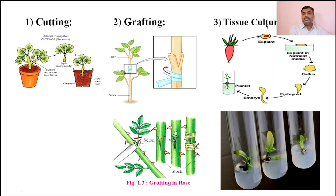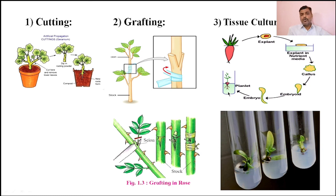In this way, these are the three different types of methods of vegetative reproduction carried out in higher plants. We have discussed all these in our previous lecture, so this is only revision.